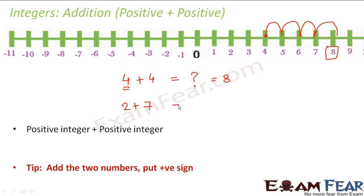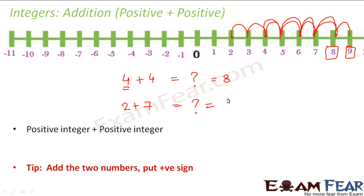2 plus 7 is equal to what? Since you are adding a positive number, you will move towards right. How many jumps? 7 — 1, 2, 3, 4, 5, 6 and 7. So where did you reach? You reach at 9. Therefore, 2 plus 7 is equal to 9.